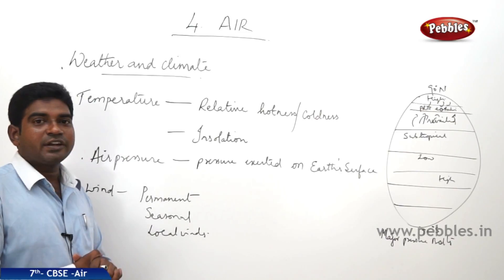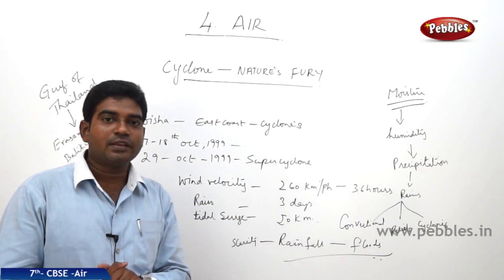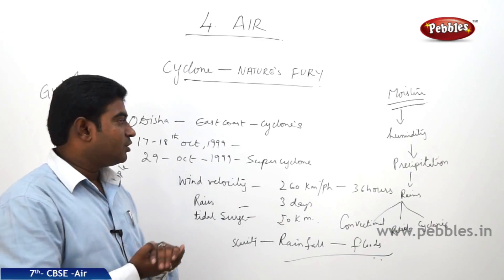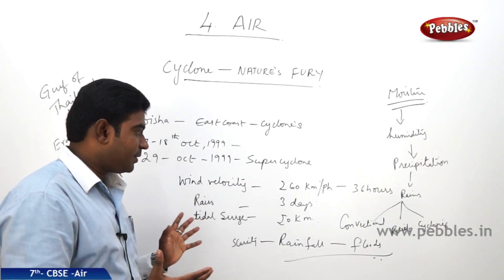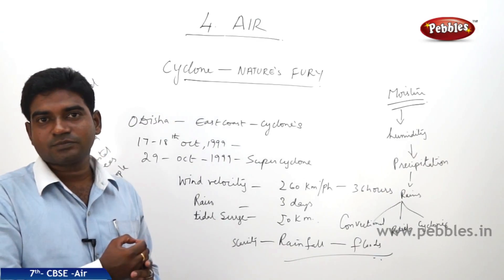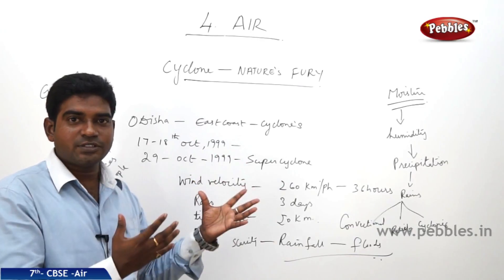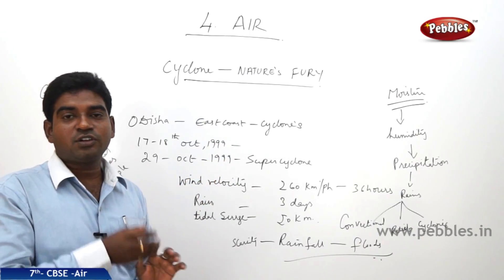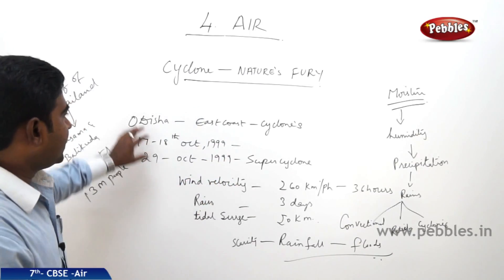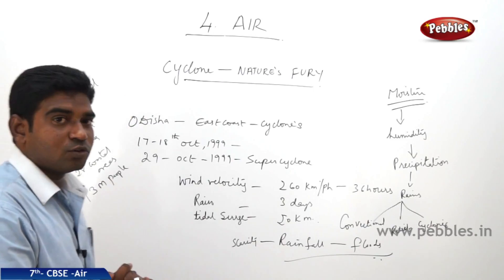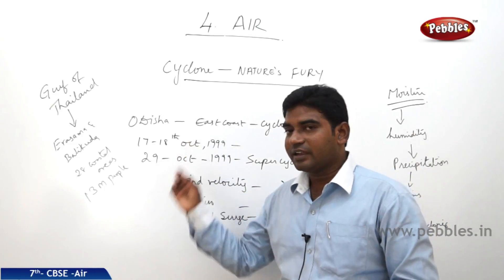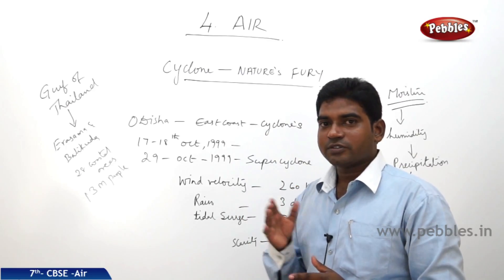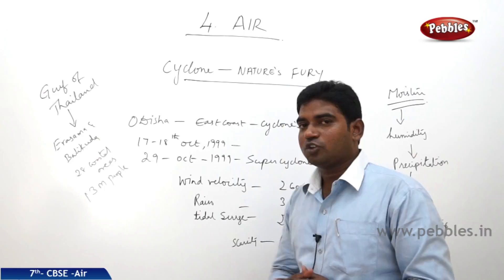Like this, we have different types of winds. Now let us do a case study on a cyclone which hit the state of Orissa in October 1999. A cyclone hit on 17th and 18th of October 1999, and within a gap of 10 days, a super cyclone hit on 29th of October 1999.